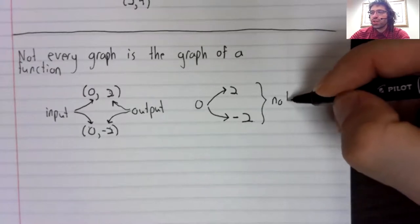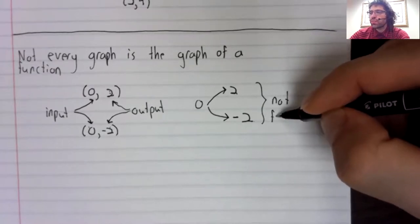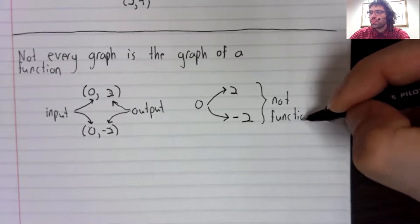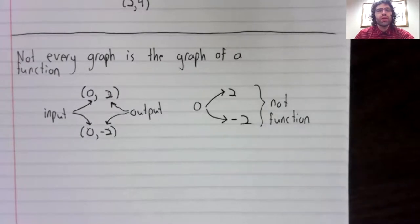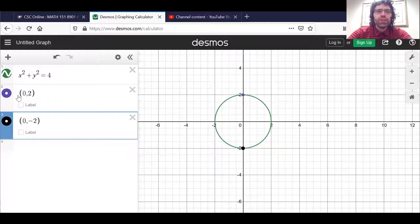This does not represent a function. So circles in general aren't functions. If I go back to this graph, notice that the points I selected to illustrate that this curve is not a function are on the same vertical line. They're both on the y-axis.